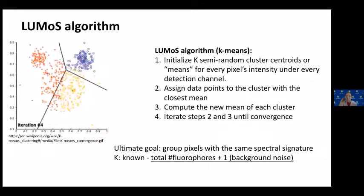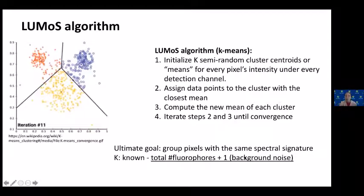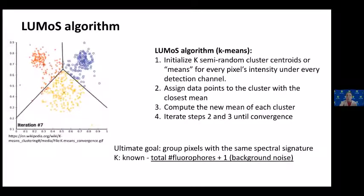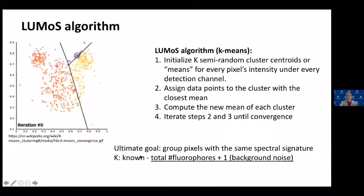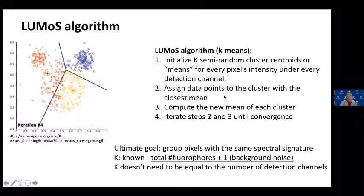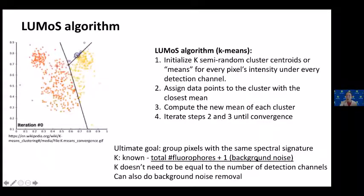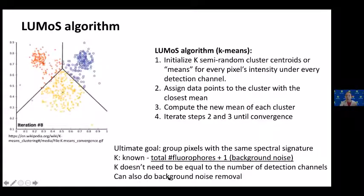One drawback of k-means is that k is hard to define, but for this application k is already known — the total number of fluorophores in the sample plus one. The additional one is background noise, which by nature shows a different intensity profile compared to pixels labeled with a fluorophore. K also doesn't need to equal the total number of detection channels — it can be more than that. A side benefit of LUMOS is that it can also perform background noise removal.